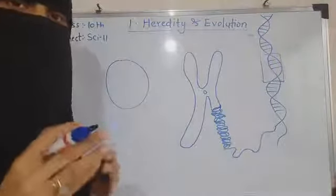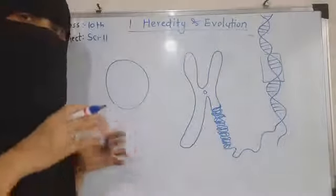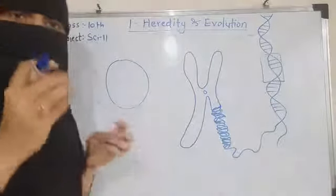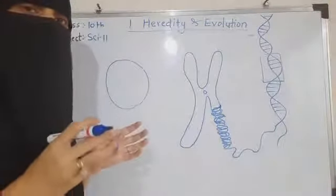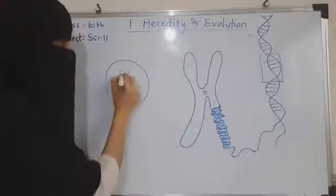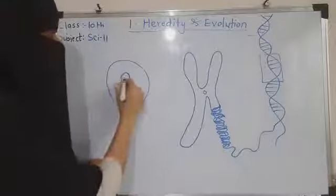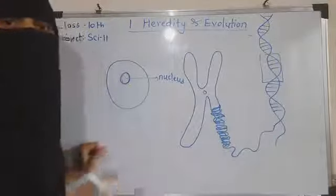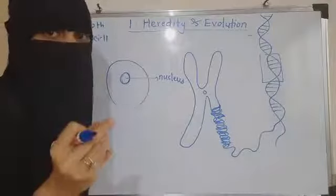Before proceeding further, I would like to remind you of a few concepts so we can start afresh. The basic functional unit of life is called the cell. You know all the organelles present in the cell structure very well. The main controlling center — the main organelle present in the cell — is called the nucleus.